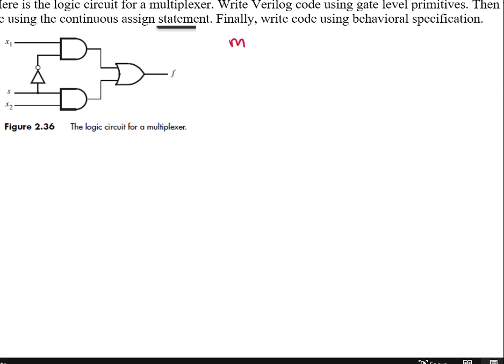So every Verilog program starts with the word module and then you give it a name. I'll call it mux. And you say what your outputs and your inputs are. So here I have x1, x2, s, and my output is f. And then I'll have input and I'll say which of those are my inputs. x1, x2, s are my inputs. My output is f.